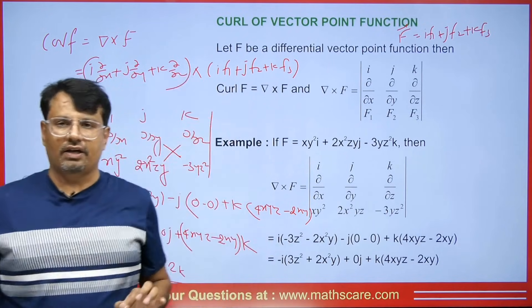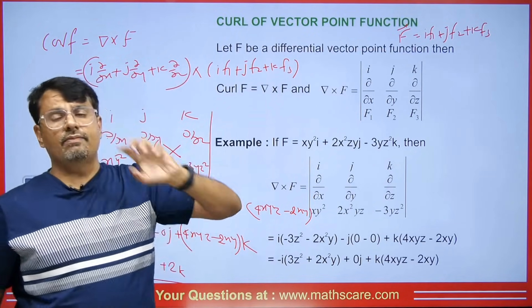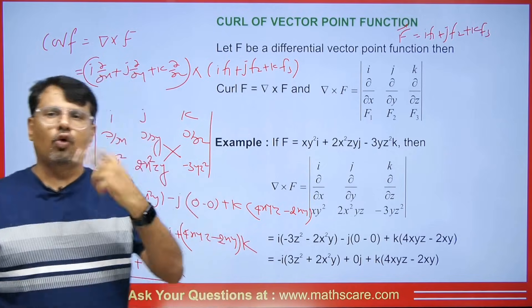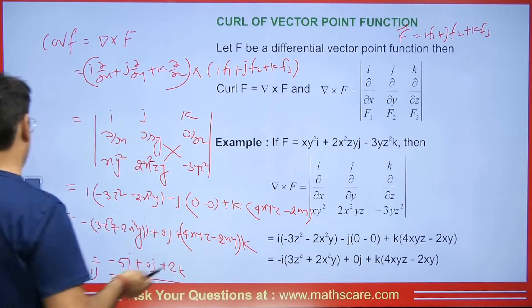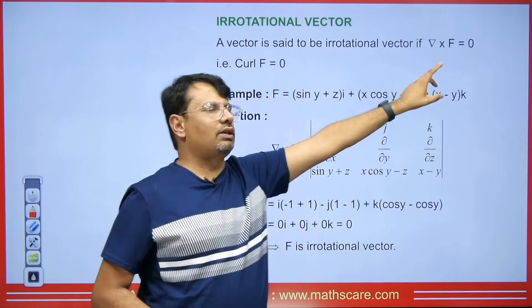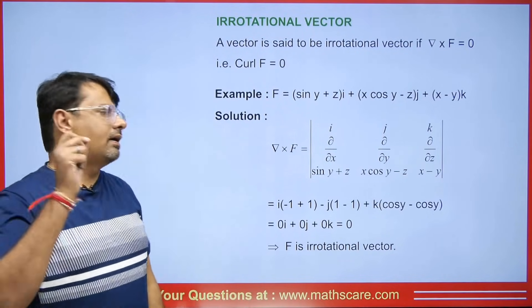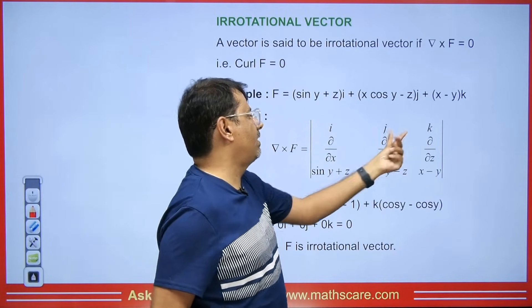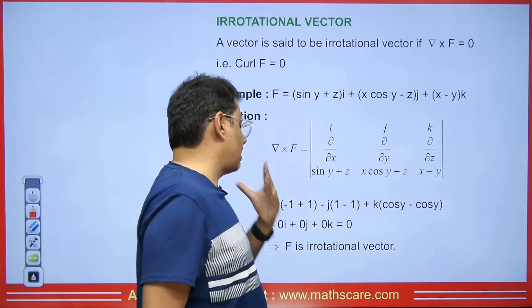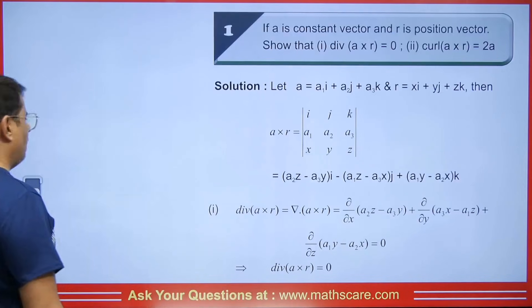Now let us discuss what an irrotational vector is. If we have any vector point function and its curl becomes 0, then f is called irrotational. We also call this a conservative vector field — two names given to it. We will use this when we study further. So if any vector point function has curl equal to 0, it is called an irrotational vector. Calculate the determinant and when 0 is obtained, the vector is irrotational.